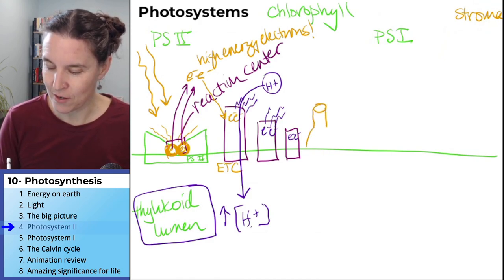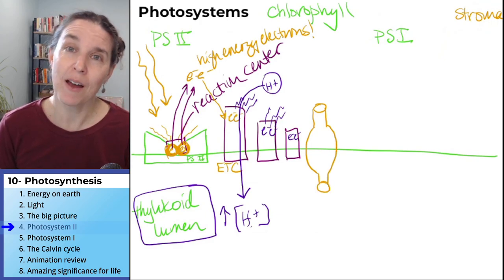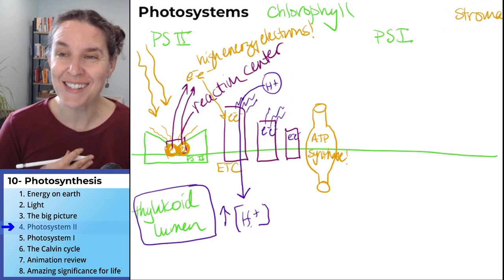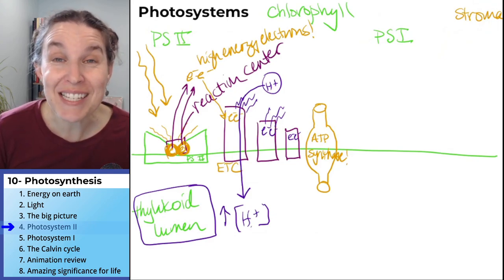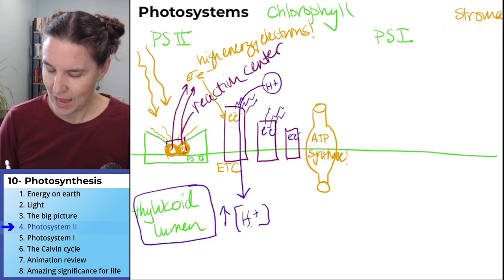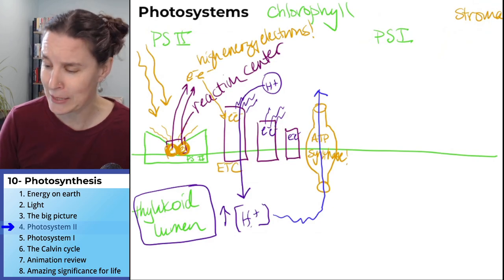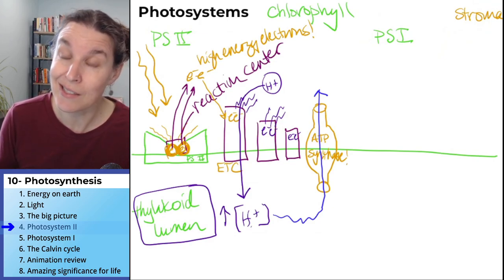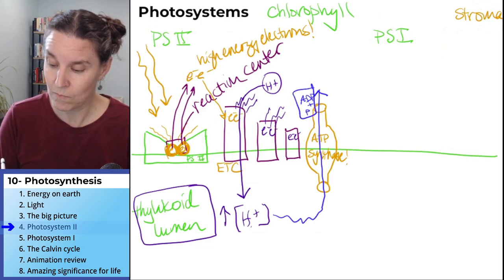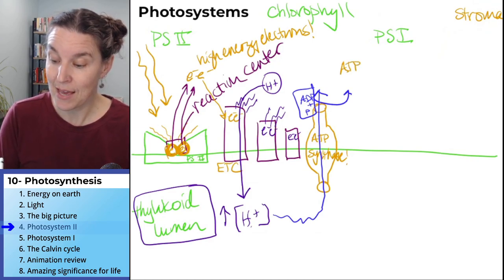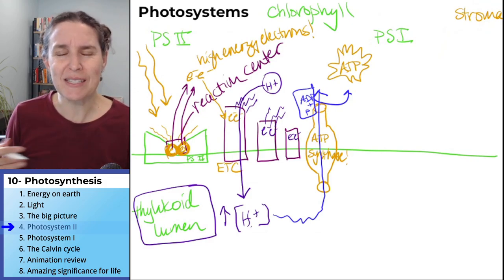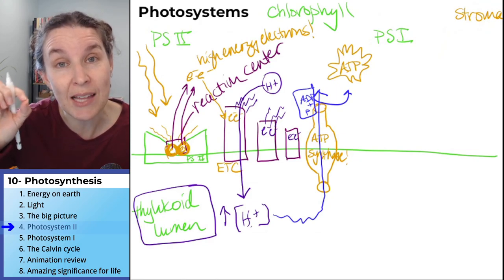It's our buddy. You're back. I missed you. ATP synthase is there saying, did somebody say hydrogen ion gradient? I can help with that. And when those hydrogen ions want to get out, what does ATP synthase do? Dude, I'll let you out if you pay a little tax as you go. And then I can turn ADP plus P into what? ATP. You already know that story, don't you?